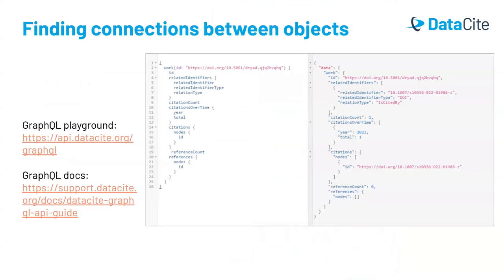To find where existing connections exist among objects, one can use the GraphQL API. The GraphQL playground can be accessed at api.datacite.org/graphql, and as usual, the documentation is available on the support site.